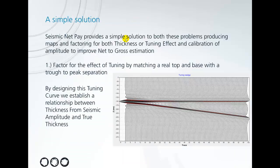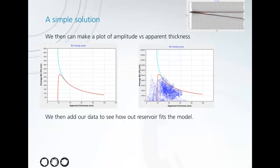Fortunately, our seismic net pay tool provides a simple solution to combating both these problems, to improve the mapping of thickness and net-to-gross in reservoirs. Firstly, we deal with the problem of thickness estimation or tuning by factoring in for the effect of tuning between a real top and base, with trough and peak separation. So what we do is we use a simple wavelet convolution to create this tuning model, which establishes a relationship between true thickness and thickness measured from amplitude. Once we do that, we can then transform this simple model into a representation of amplitude versus thickness.